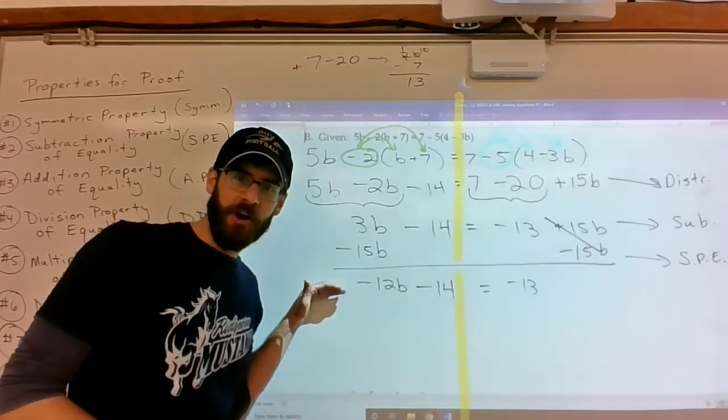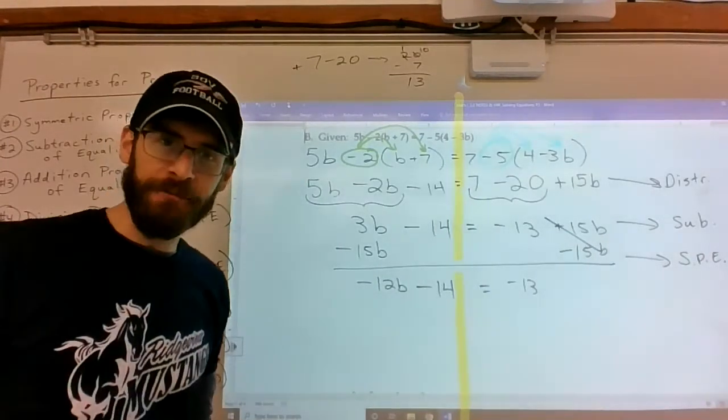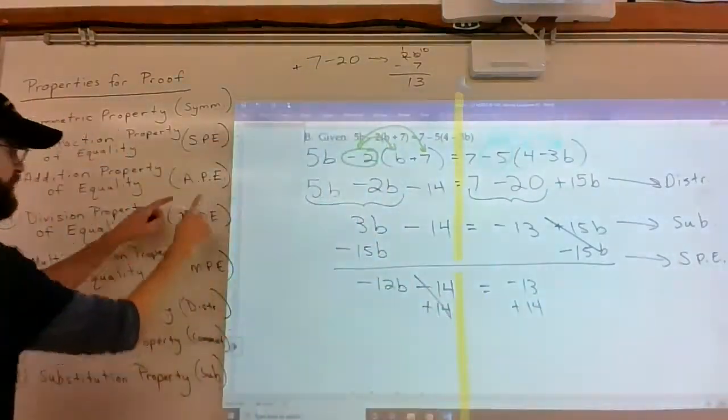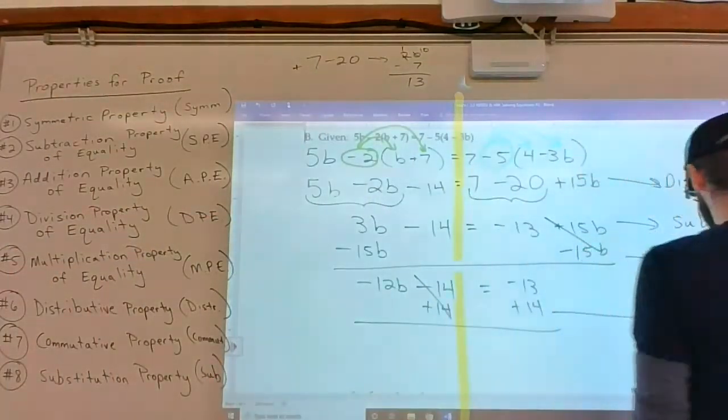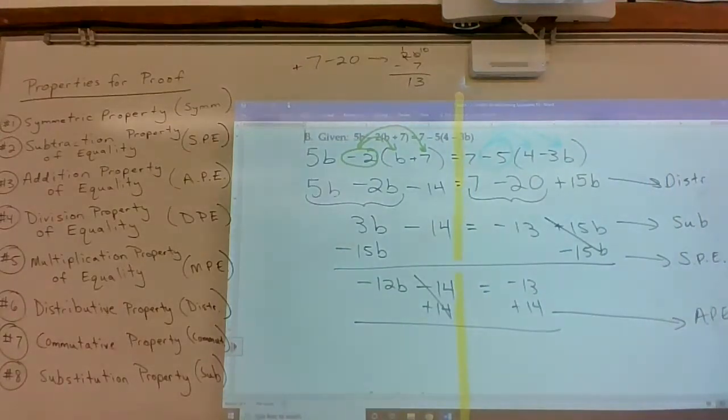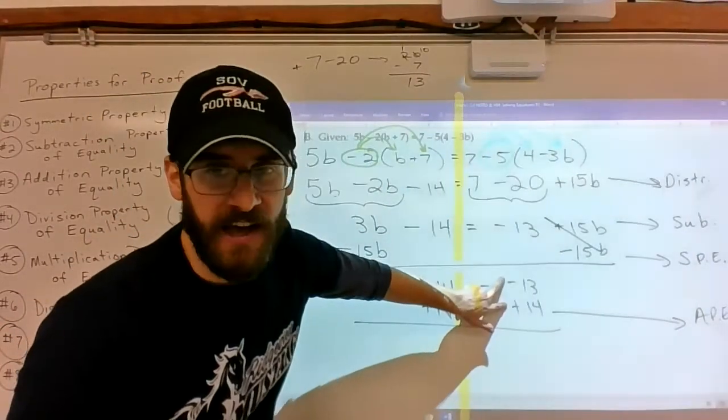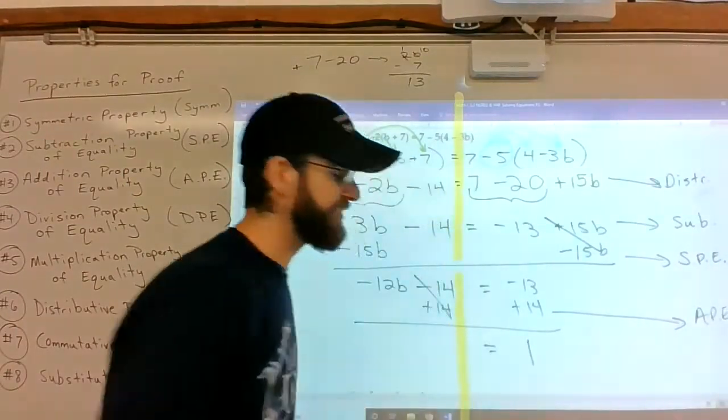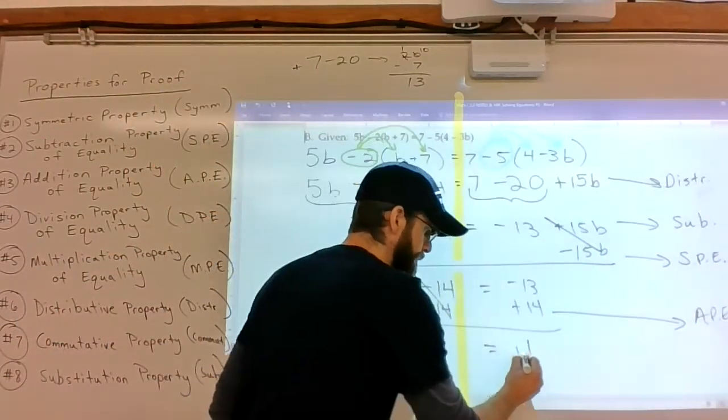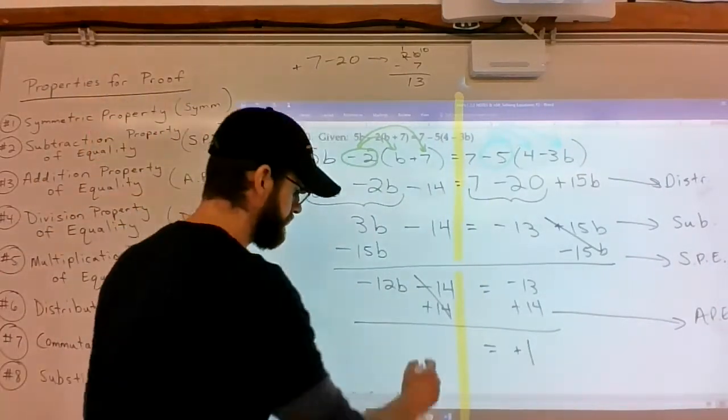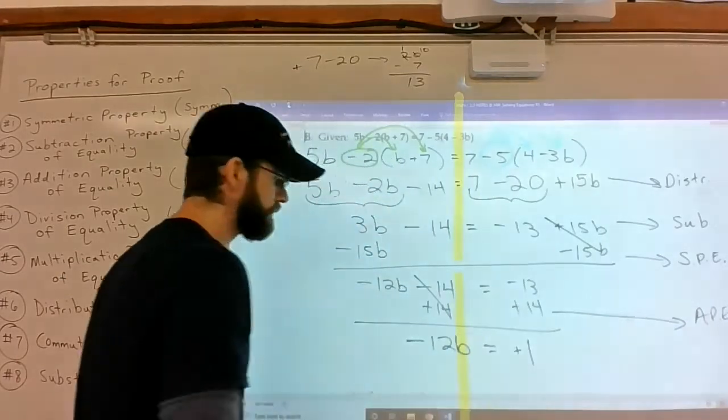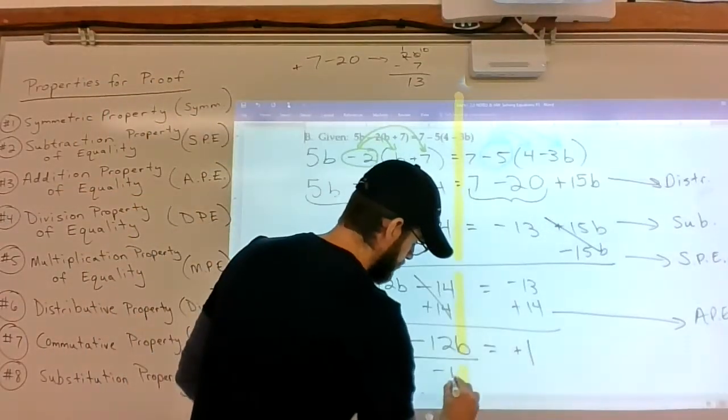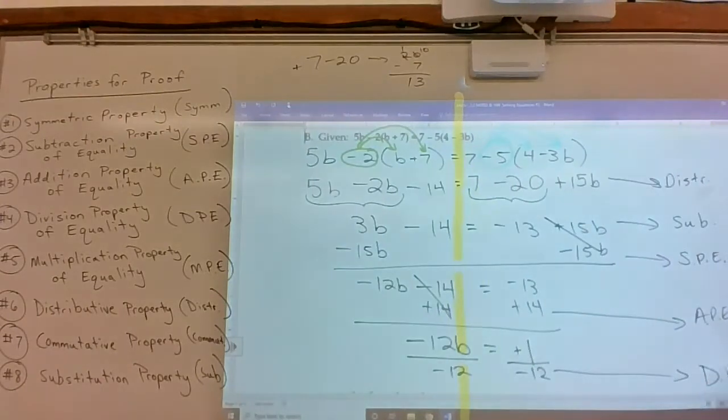And now it looks like something we saw in section 2.1. Add the 14 to both sides. Opposite sign here zeros it out. That's the addition property of equality. Opposite sign subtract the two. The sign of the bigger one is positive, so it's going to be plus 1. And then on the left-hand side, you've got negative 12b. Last move. Divide by negative 12. Get b by itself.